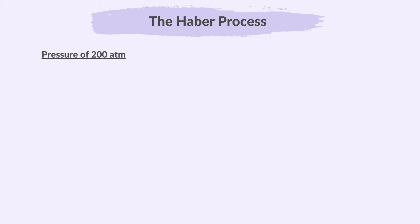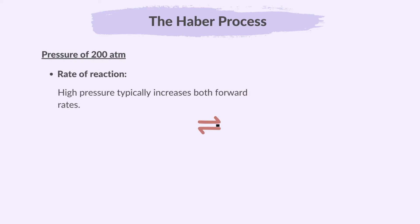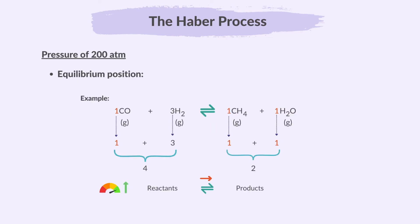Next — why is a pressure of 200 atmospheres used? In terms of rate of reaction, high pressure typically increases both forward and backward reaction rates. In terms of equilibrium position, when you increase the pressure, the reaction moves to where there are fewer gas molecules. This happens because the system wants to balance the pressure, favoring the side with fewer gas particles to reduce it, since fewer gas particles means lower pressure.